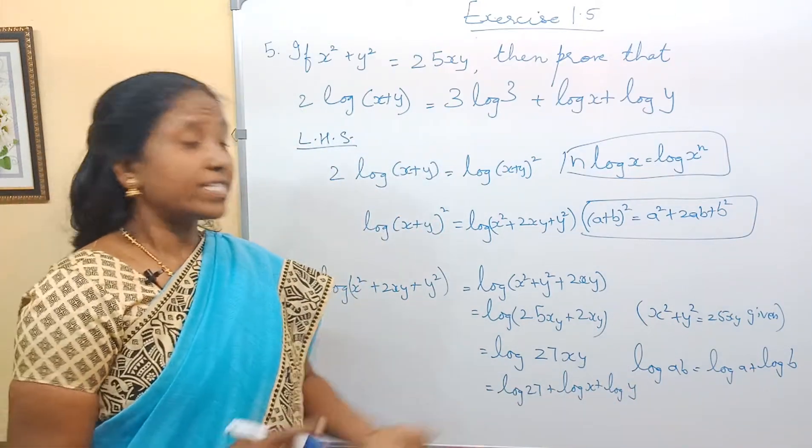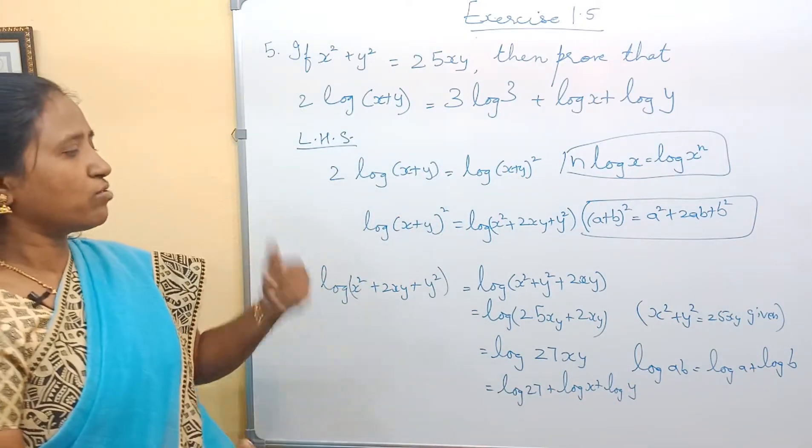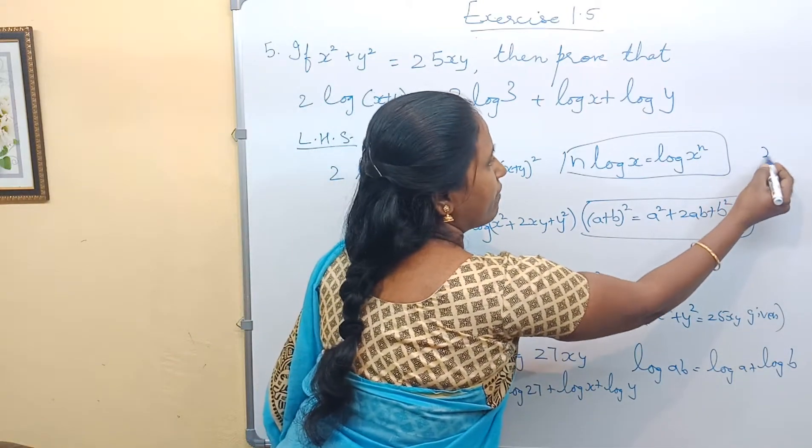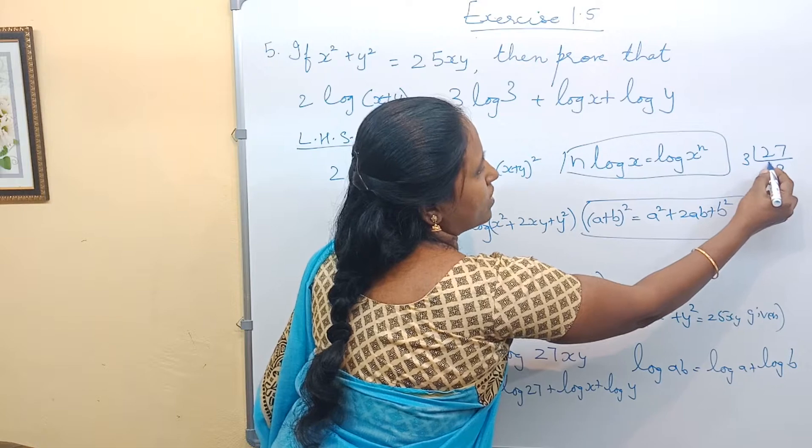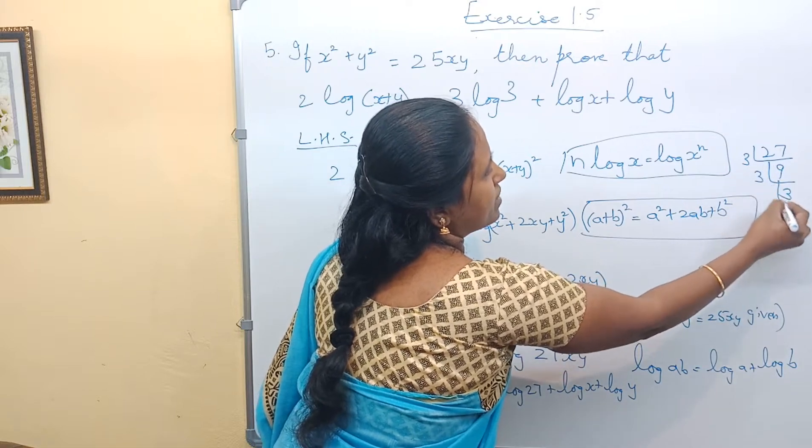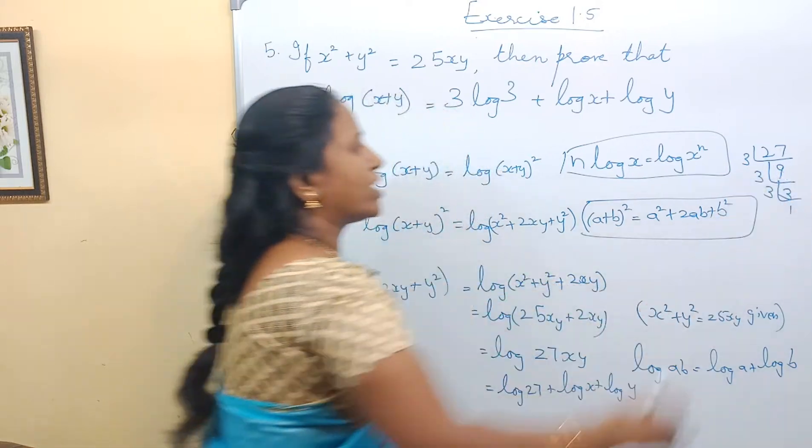27 can be further simplified. How shall we simplify 27? When prime factor is 27: three nines are 27, three threes are 9, three ones are 3.